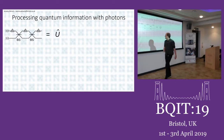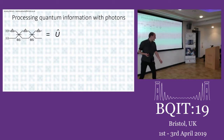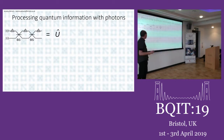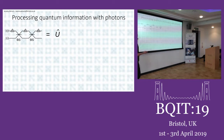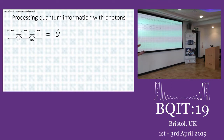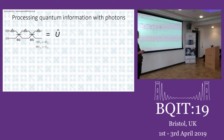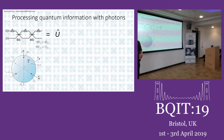Here in Bristol we're interested in processing quantum information using photons and building quantum technology. One good way to do that is to use a dual rail qubit: you have two spatial modes, and your qubit is a logical zero if a photon is in the top mode and a logical one if it's in the bottom mode. By implementing three phase shifters and two beam splitters you can get from anywhere on the Bloch sphere to anywhere else.